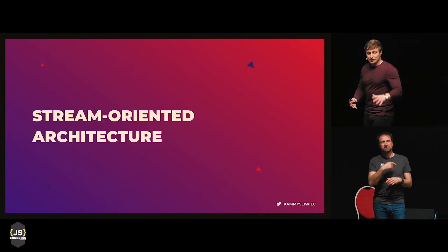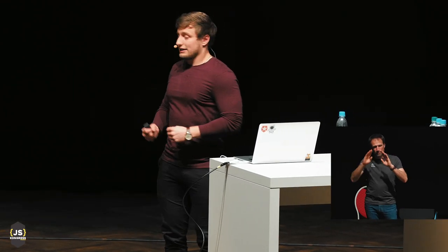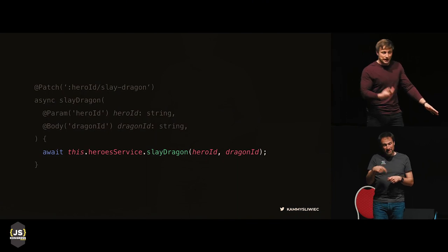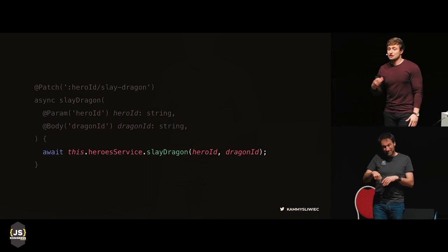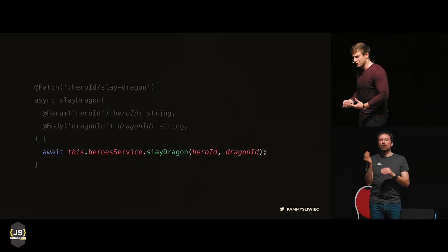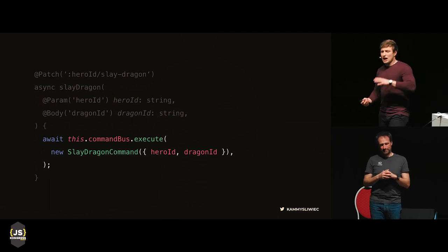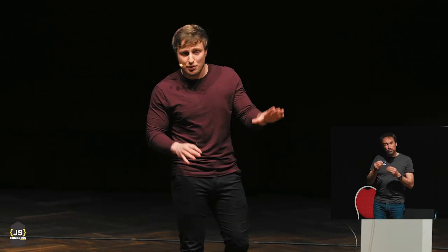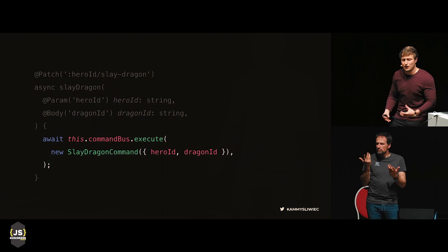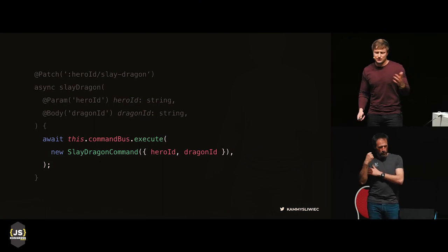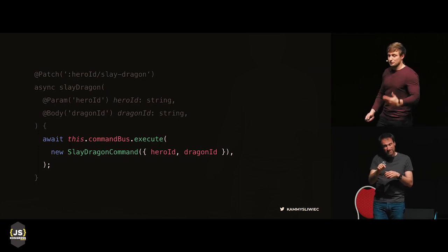Now we're moving from layered architecture to the stream-oriented one. In our slayDragon method from the controller, we were calling the service method. But in stream-oriented architecture — in CQRS — we don't have a services layer anymore. Instead, we have commands, queries, and events. We have to execute a command. In Redux you have an action, which is both a command and event at once, while in a typical CQRS architecture, commands and events are separate. A command is a request for a change — for example, requesting that the dragon be killed by the hero. It's a simple class with two properties: hero ID and dragon ID. The command bus is provided out of the box by the nest-cqrs package.